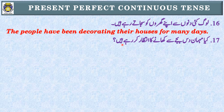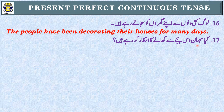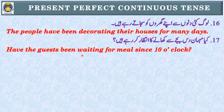Sentence 17: 'کیا مہمان 10 بجے سے کھانے کا انتظار کر رہے ہیں؟' Identification: 'رہے ہیں' اور '10 بجے سے' — Present Perfect Continuous Tense۔ Subject: 'مہمان' یعنی guests — plural — have been۔ Interrogative: have کو start میں لے آئیں گے۔ Have the guests been waiting for meal since 10 o'clock? یاد رہے: '10 بجے' point of time ہے تو since، لیکن '10 گھنٹے' ہوتا تو for 10 hours۔